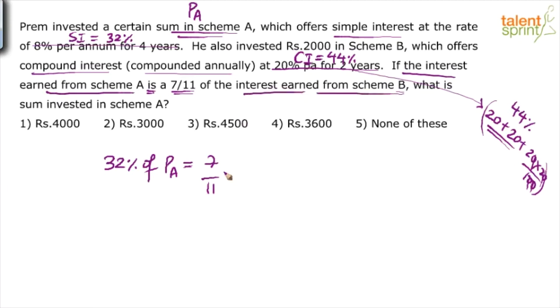Now, what is the interest earned from scheme B? 44%. 44% of what? The amount invested, which is 2000 rupees. See, this amount is given to us. Principle in case of compound interest is given to us. So this is 44% of 2000.